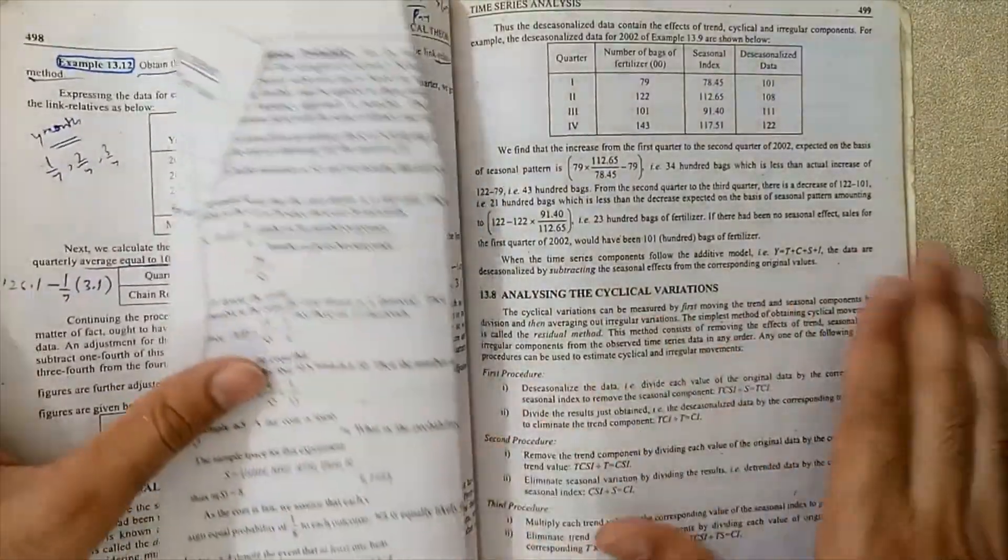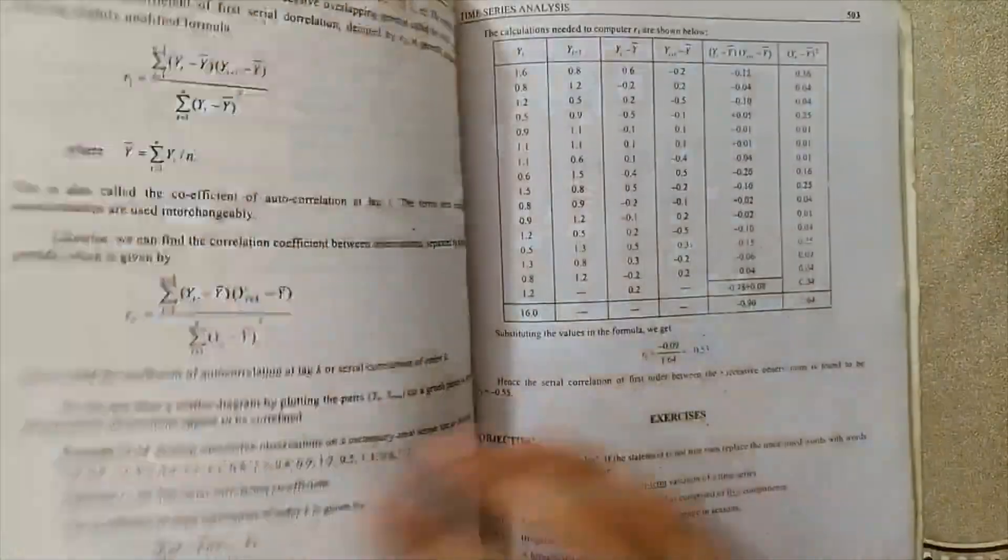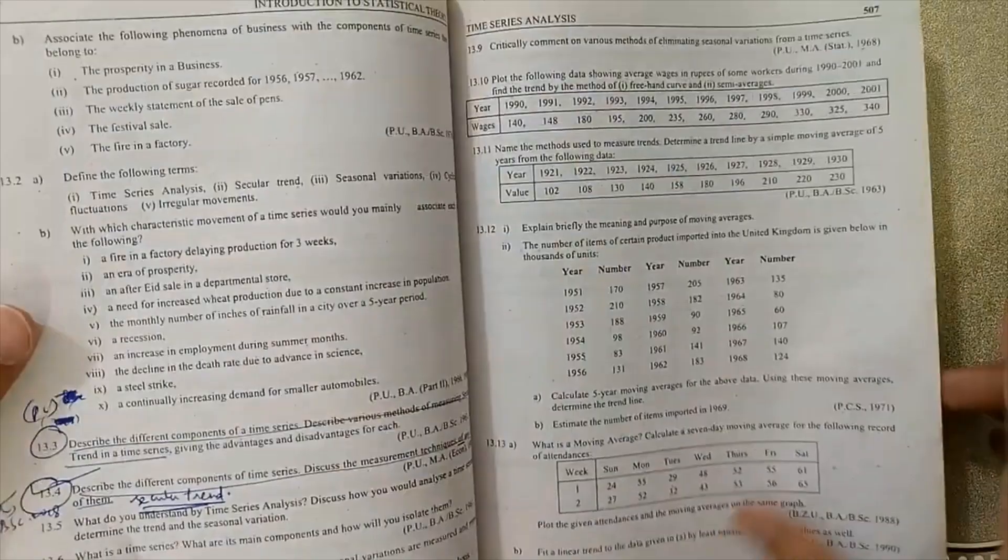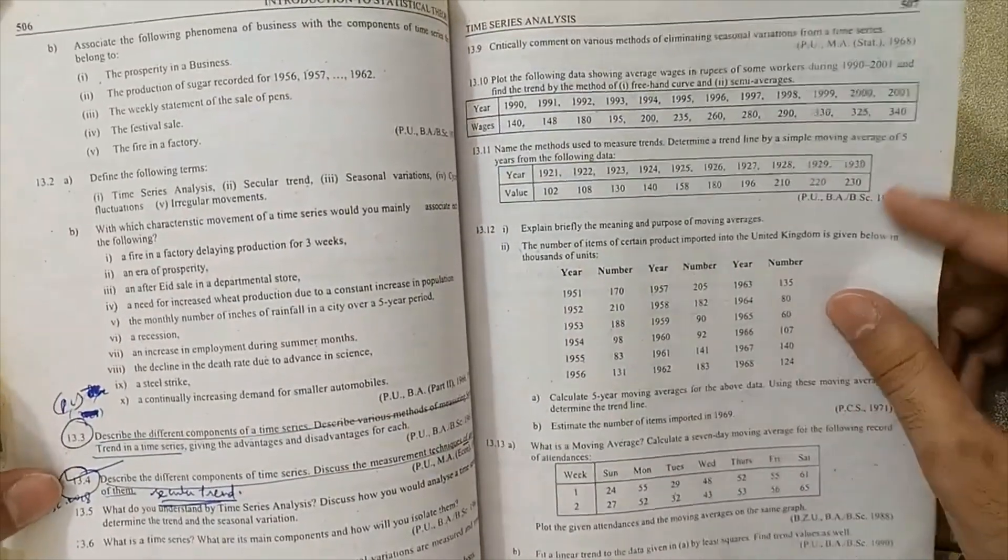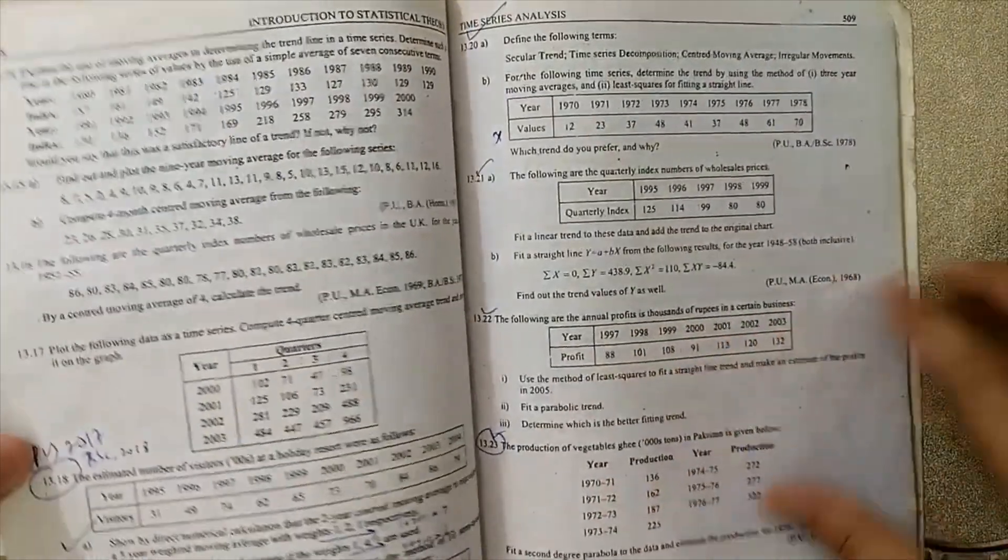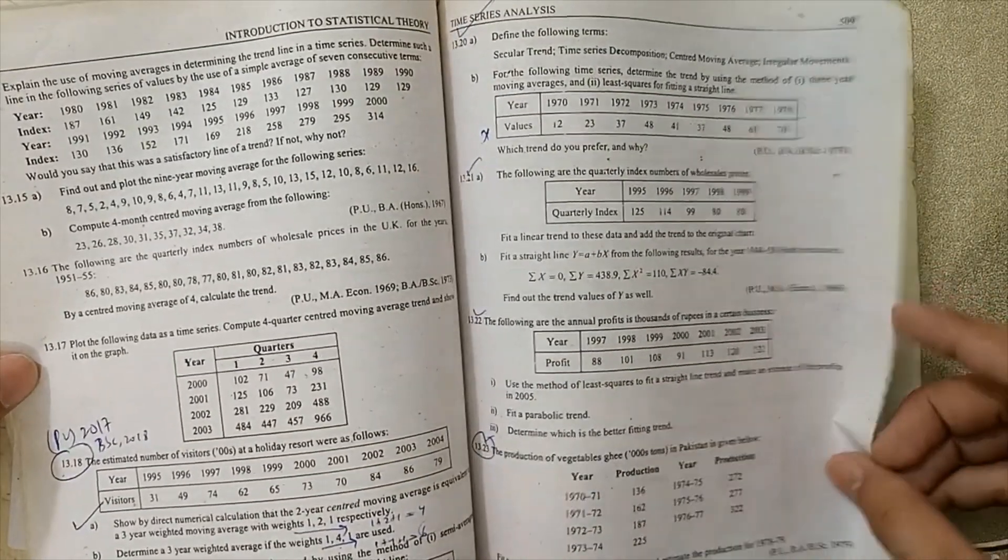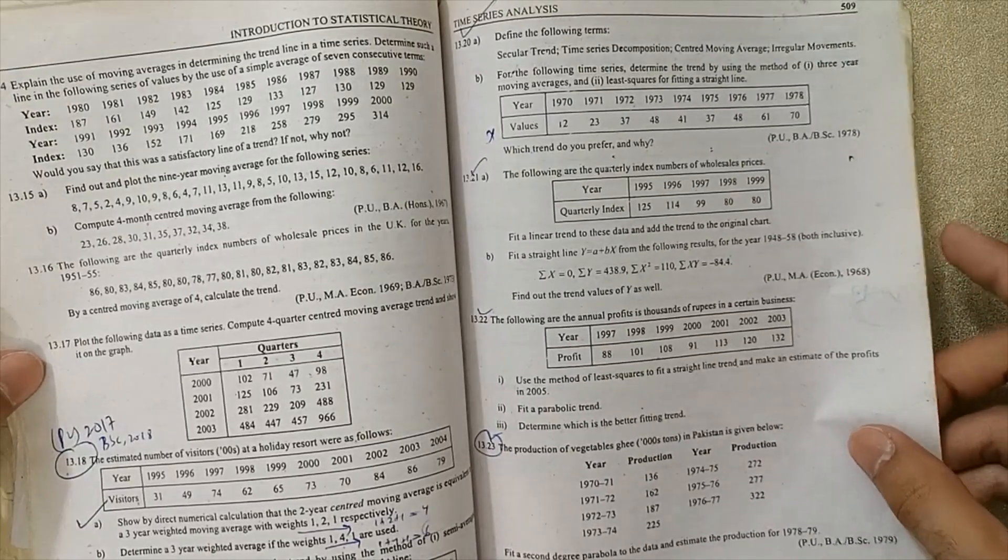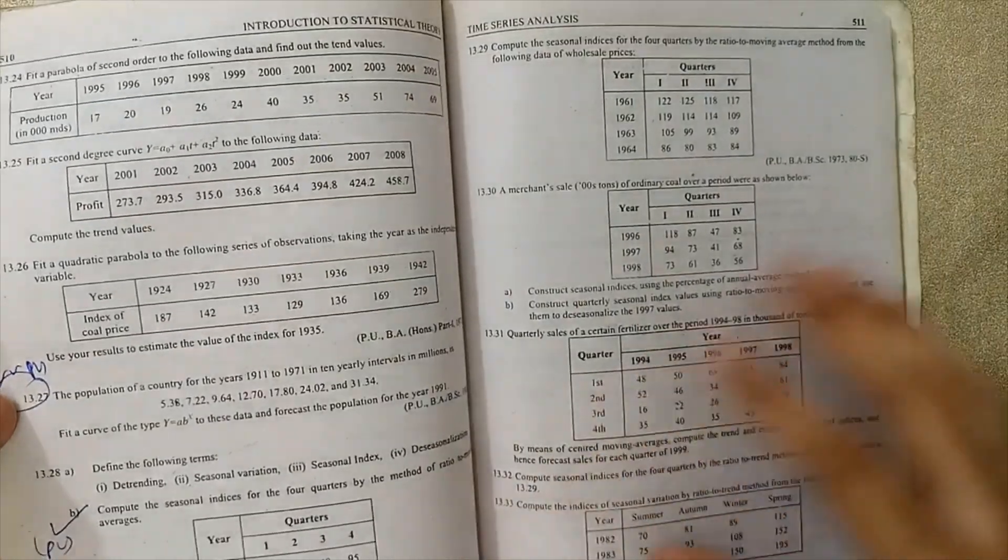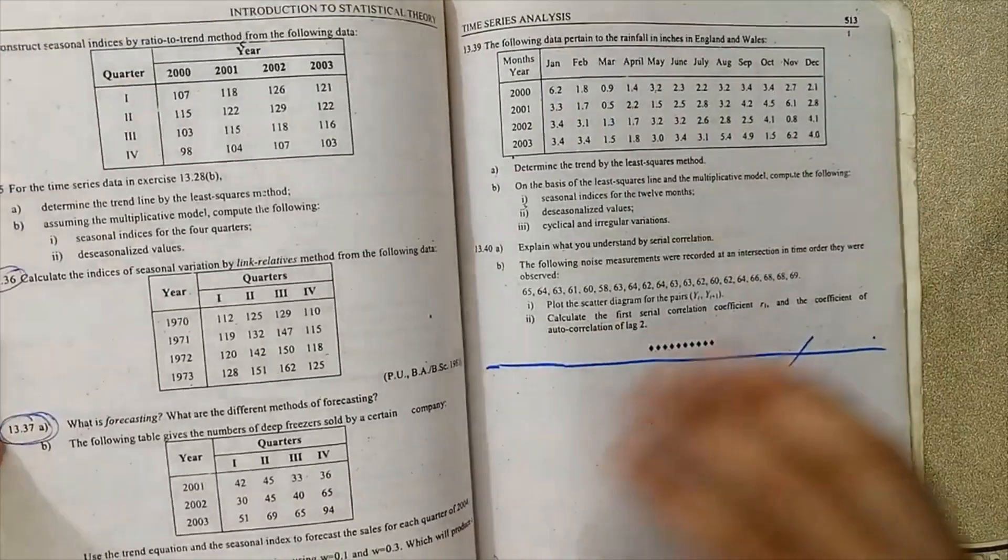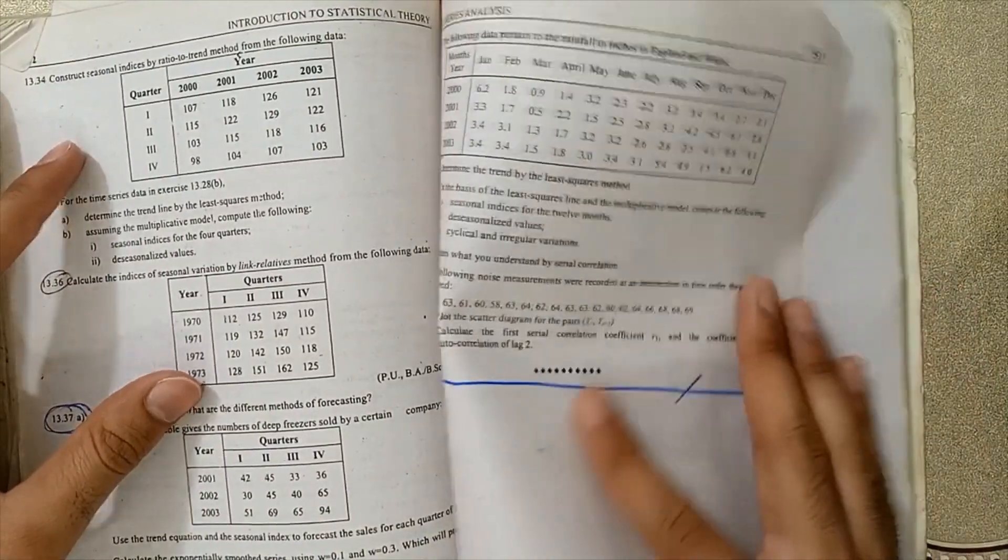Next, I'm going to move to the exercises. Exercise 13.3, 13.4, 13.8 is very important. 13.18, you can watch 13.23, 13.22, 13.27, 13.28 B part, 13.23, and 13.7. I will discuss the time series.